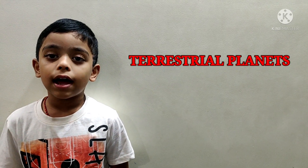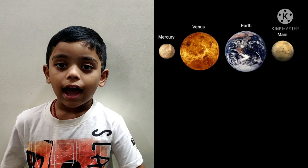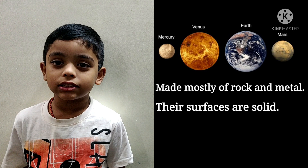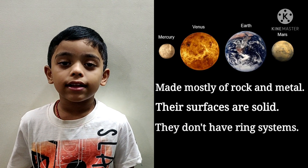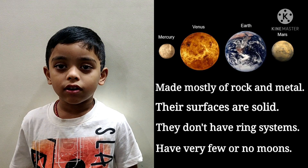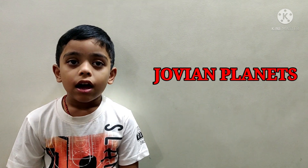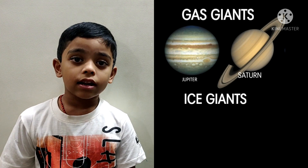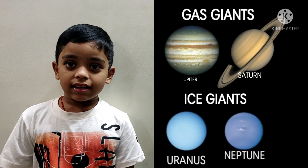The inner planets, also known as terrestrial planets, are smaller and made mostly of rock and metal. Their surfaces are solid, they don't have ring systems, and they have very few or no moons. The outer planets, also known as dwarf planets, are further classified into gas giants — Jupiter and Saturn — and the ice giants, Uranus and Neptune.